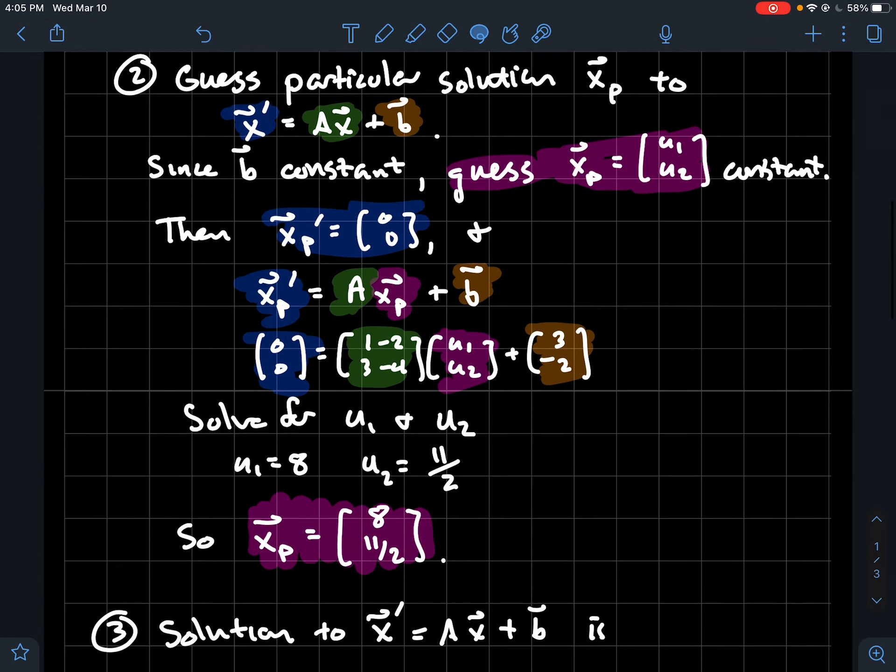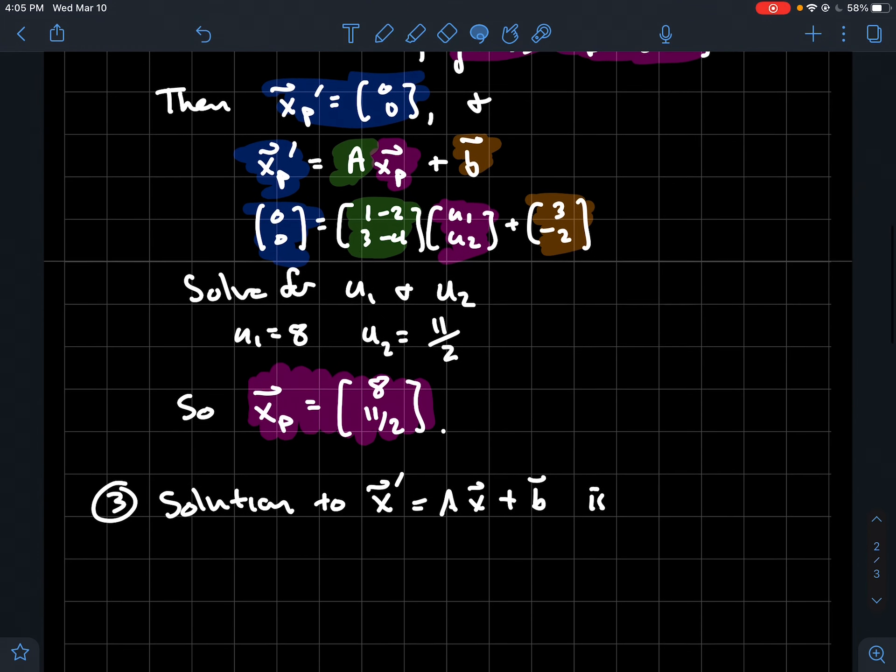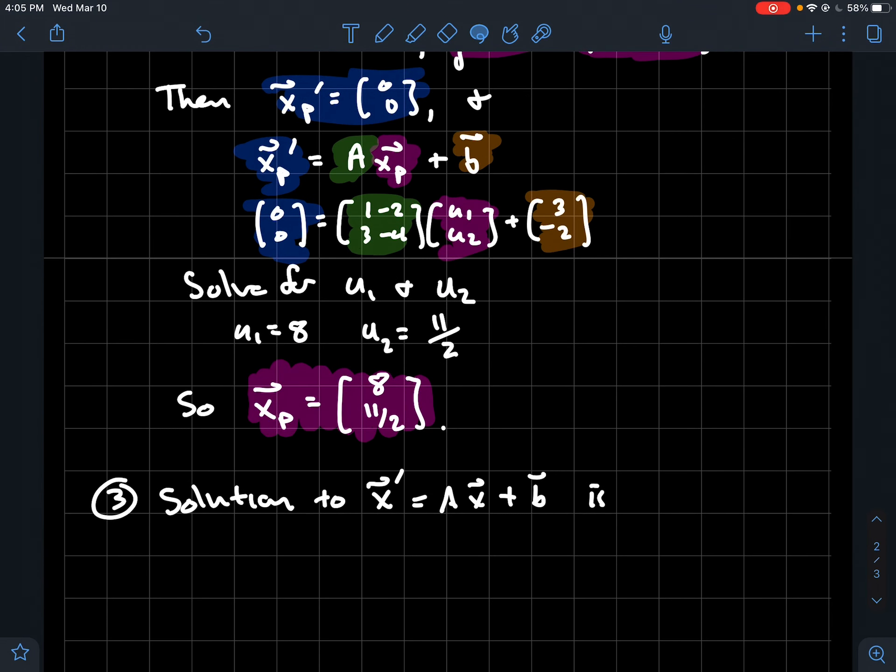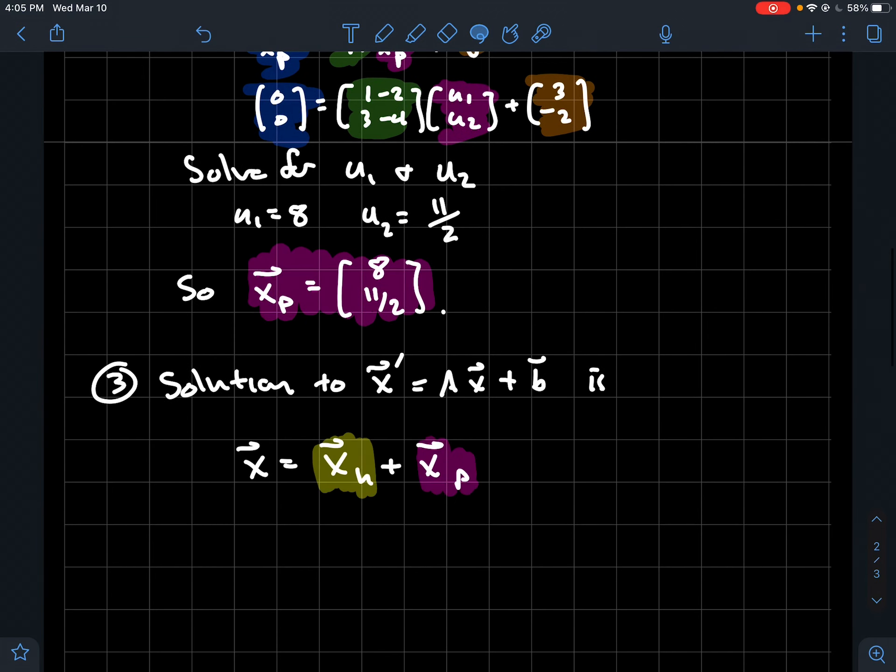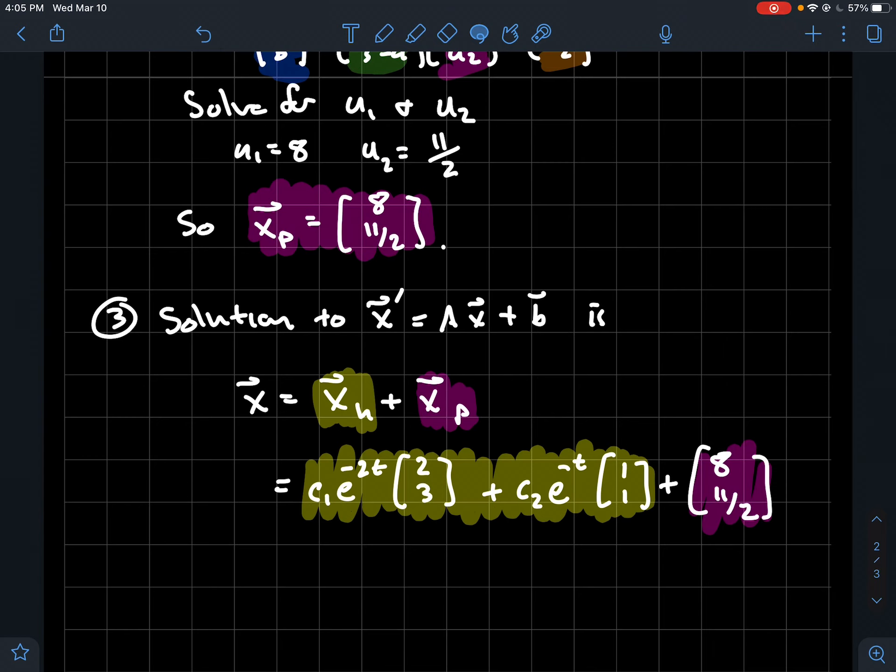That's the end of step two. Step three is to put it all together. The solution to the inhomogeneous system, the general solution to the inhomogeneous system, is the homogeneous solution plus the particular solution that you found in part b.